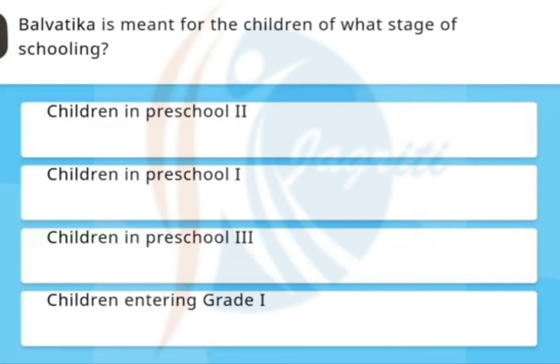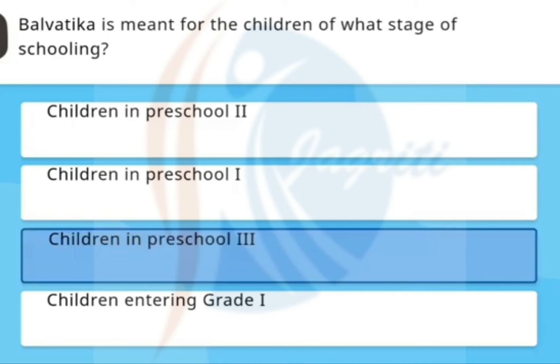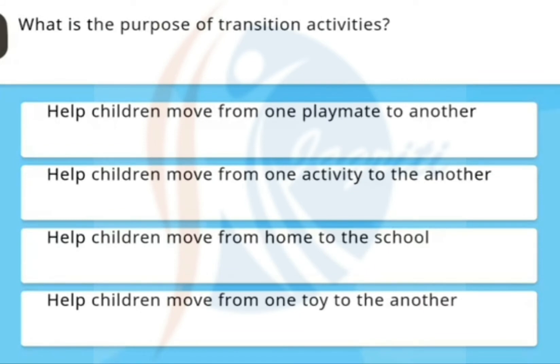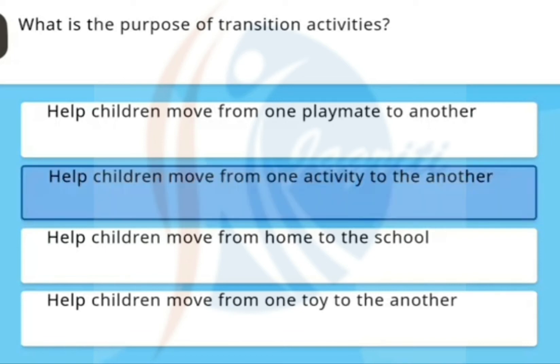Balvatika is meant for the children of what stage of schooling? The correct option is children in preschool, third year. What is the purpose of transition activities? The correct option is to help children move from one activity to another.